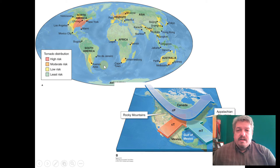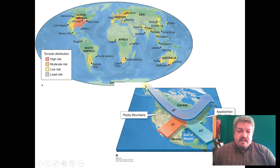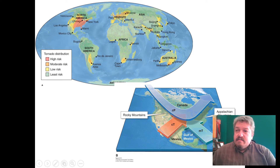The most tornadoes happen in the central United States and in Florida, though they do occur in Europe, Australia, and other areas. The U.S. has the right characteristics: continental polar air — cool and dry — plus continental tropical air — warm and wet — and maritime tropical air — very warm and moist — all meeting right here in the Great Plains. That combination leads to the right conditions for multiple tornadoes to form.